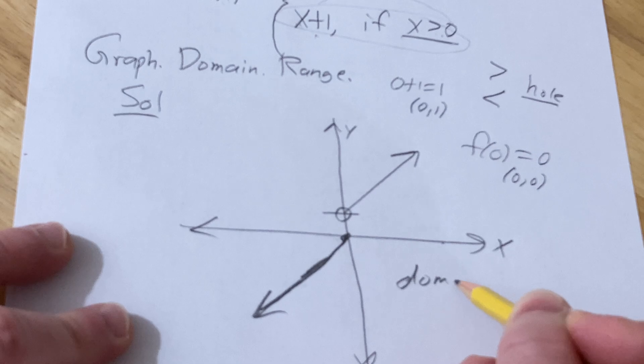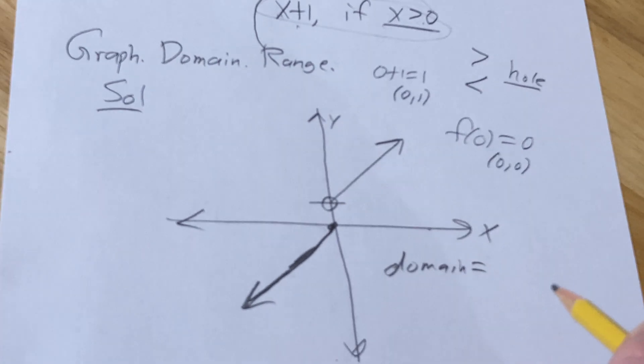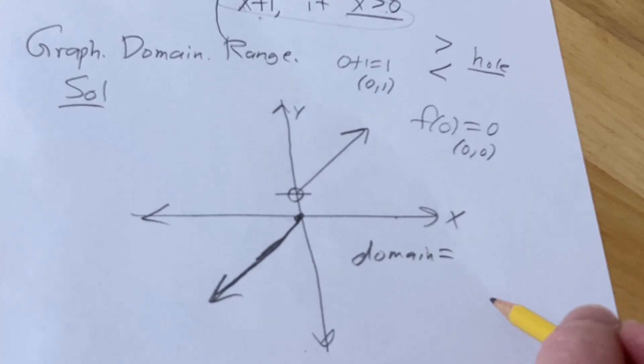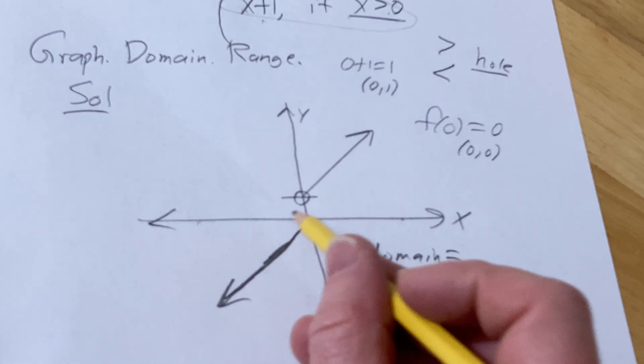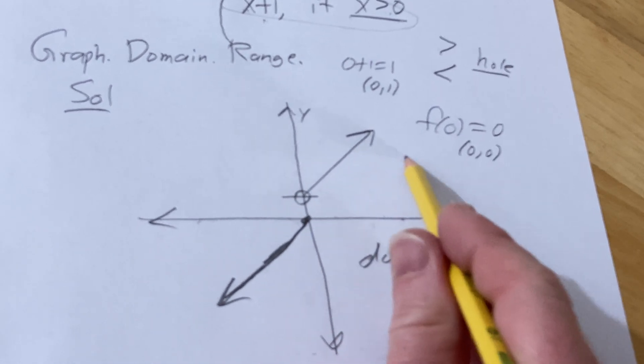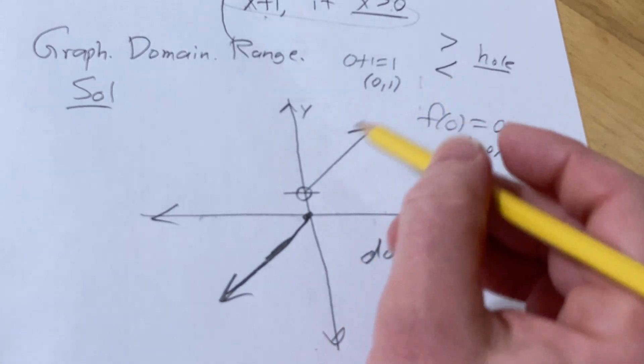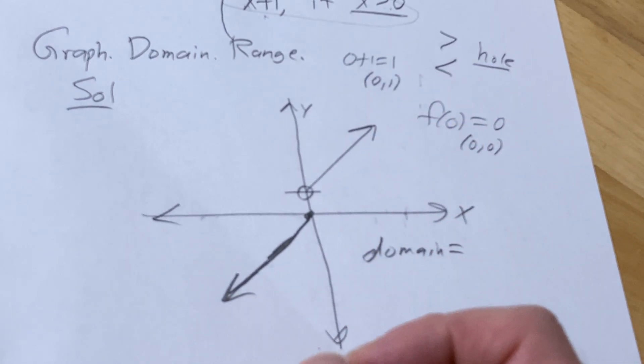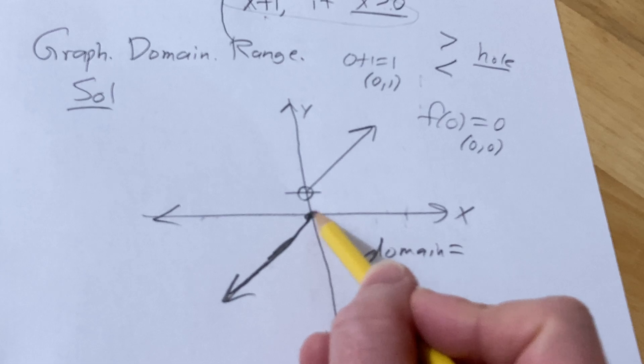For the domain, we're looking for the set of all x values that give rise to y values. So no matter what x value I pick here on the x-axis, I'm always going to get a y value, right? Even the ones you don't see because this goes up forever and this goes down forever. Even zero, right? I get a y value here of zero.